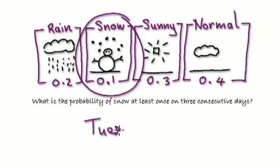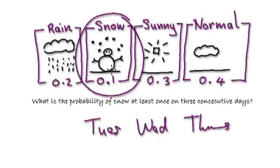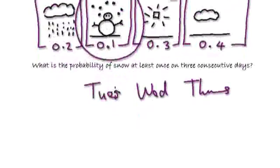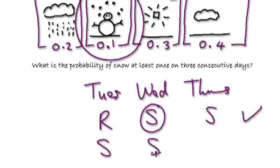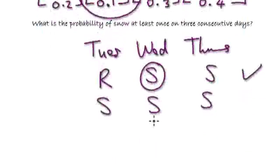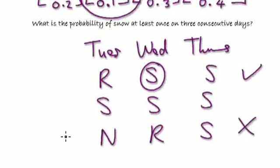So for example, let's say Tuesday, Wednesday, and Thursday. What is the probability of it snowing at least once? This would be a good outcome: let's say rain, snow, snow. Because she's got snow on at least one of the three days. So this would be a good outcome. Snow, snow, snow. Let's say normal, rain, and sun - this would be a bad outcome, because there's no snow at all on any of the three days.